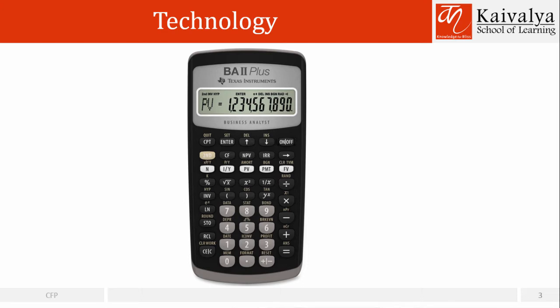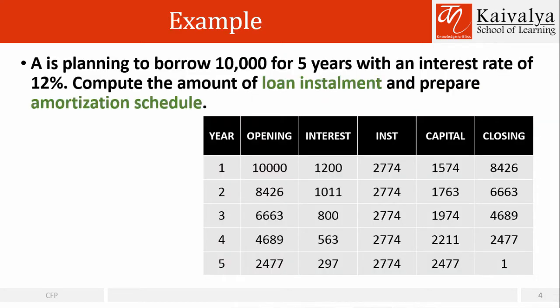I will also show where the AMORT function is available in our calculator. So this is where we can see AMORT. Every time we have to use this button — first and second — then press the PV button so the AMORT function opens, wherein we find out P1 and P2. These are two important things which I am going to show how to use. Let's quickly move further and take a question.